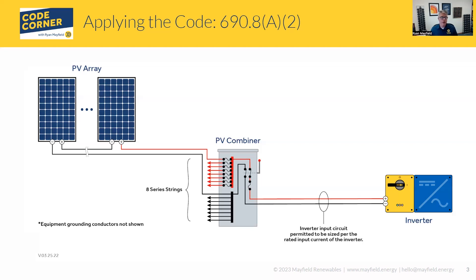When you put all that together, this will be helpful for these larger type installations. You don't have to size your conductors by the theoretical maximum short circuit value that the array could potentially be putting into the inverter, because the inverter is controlling the amount of current running through that circuit. All in all, it's a good code reference — something you should be aware of and trying to apply in your own systems. We're utilizing these in our designs as much as we can.